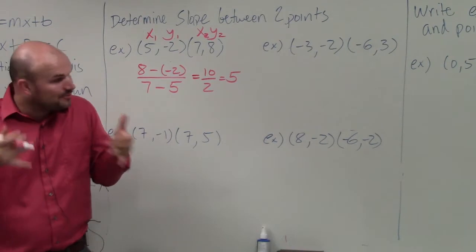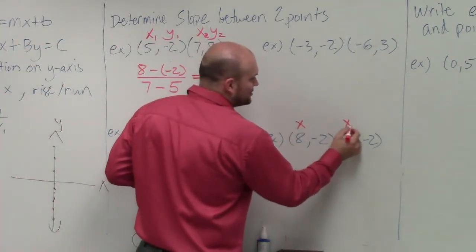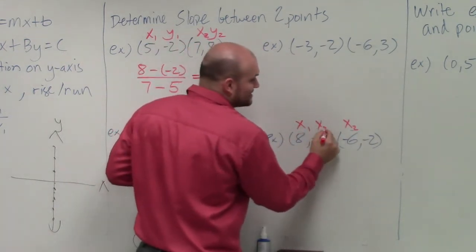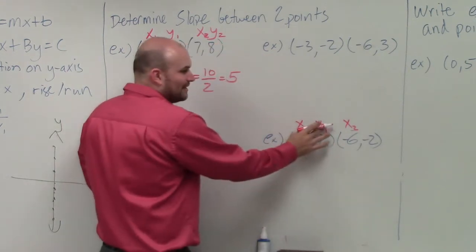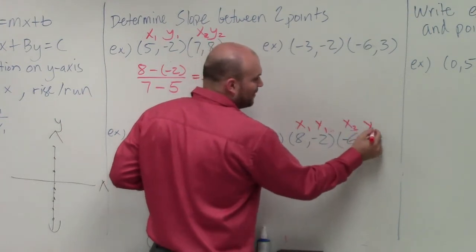So again, basically, if you can remember, the main important thing when using the slope formula is to determine what your x1 and x2 are. I always like to have the first point to the left be x1, y1. It does not matter which point, as long as this point is x1 and y1, and this one's x2 and y2.